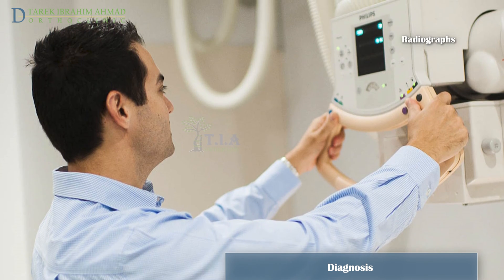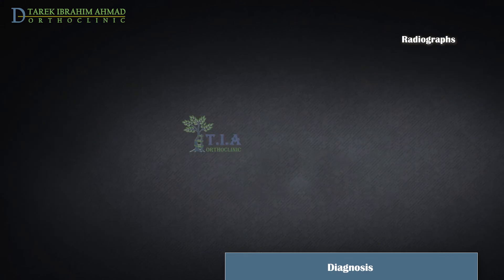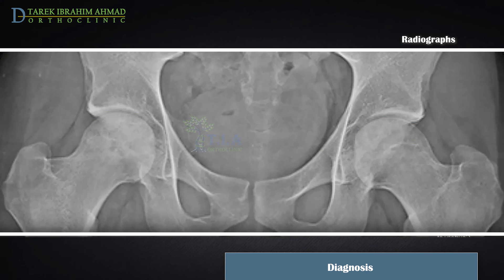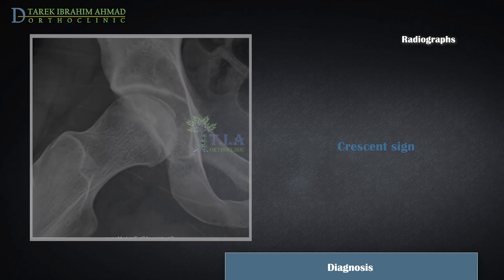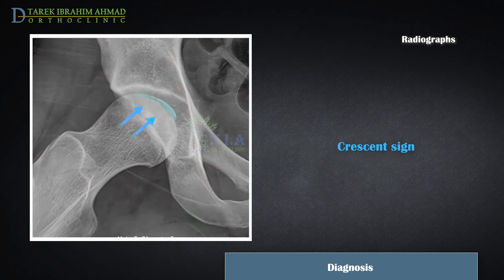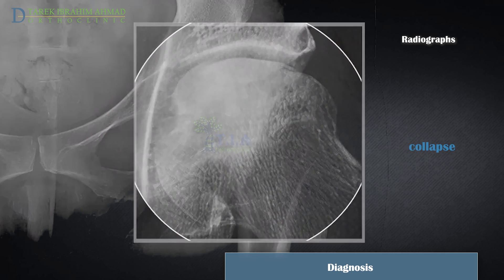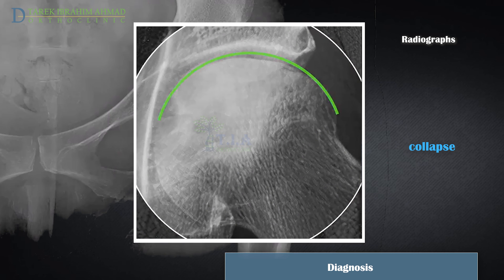Imaging studies will help your doctor confirm the diagnosis. The earliest findings are mild density changes, followed by sclerosis and cysts as the disease progresses on X-ray. A thin curvilinear lucent line parallel to the cortical margin of the femoral head — the crescent sign — is evidence of subchondral collapse. Later stages reveal loss of sphericity or collapse of the femoral head, and ultimately joint space narrowing and degenerative changes in the acetabulum.